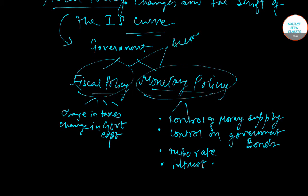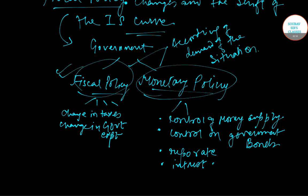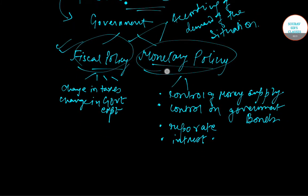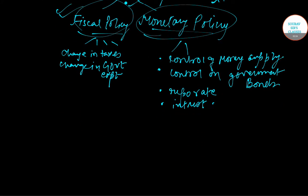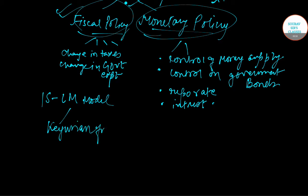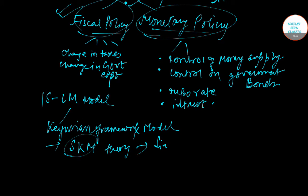In today's video we are going to talk about fiscal policy only. Now let me tell you what the IS-LM model is. The IS-LM model is a Keynesian framework model and it is derived from the SKM theory — SKM is the Simple Keynesian Model.